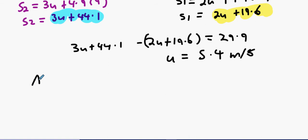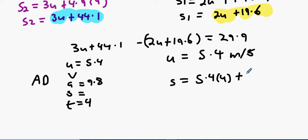Your t value is 4, your u value is 5.4, your a value is 9.8. Use s equals ut plus half a t squared. What did you get? 100 meters.